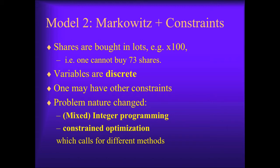However, Model 2 is also harder to solve. When complex constraints are introduced, the problem becomes a constrained optimization problem. When variables are not continuous, the problem becomes an integer programming problem.